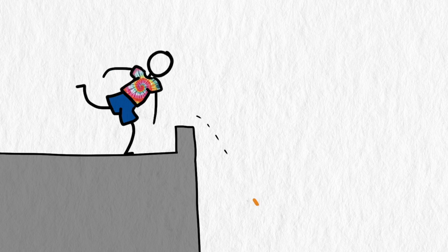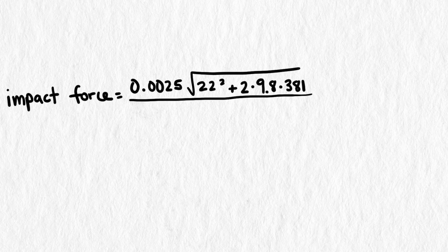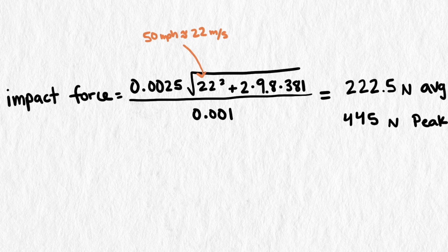Even if a person threw the penny down, so it had an initial velocity of 50 miles an hour, it would only achieve a speed of 89 meters per second, and increase the average blunt force to 222.5 newtons. Still not enough to kill someone.